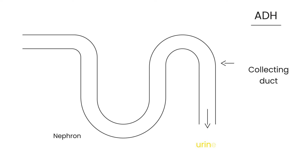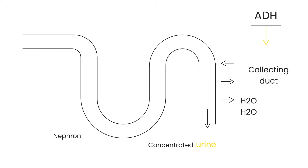ADH works on this collecting duct — it brings water back into your bloodstream. That is the fundamental role of ADH. When that happens, because water is coming back, the urine becomes more concentrated. So less water remains in the urine because it has gone back into the bloodstream.